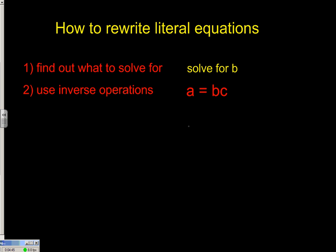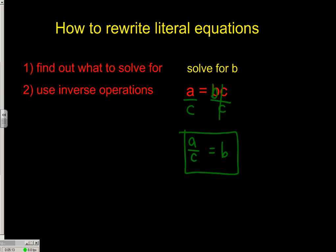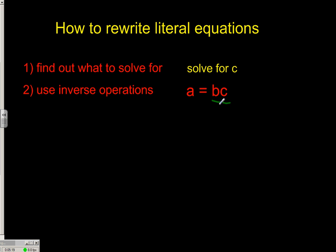There are a lot of equations out there that don't have an x or a y, and we're talking about rewriting literal equations. So let's go and solve this equation for b. b is multiplying c, so to get the c to go away we're just going to divide both sides by c. So a divided by c equals b. What if we wanted to solve for c? In that case, I would divide both sides by b to free up the variable c.